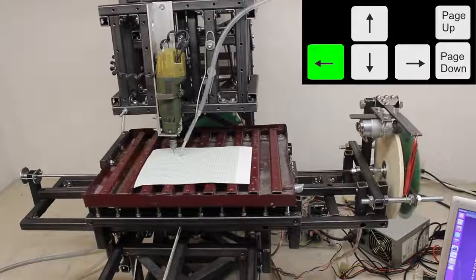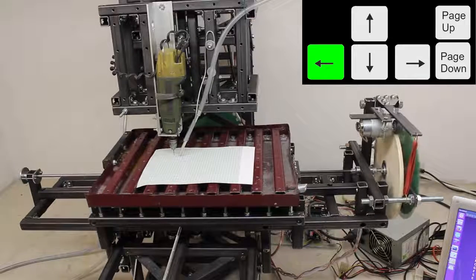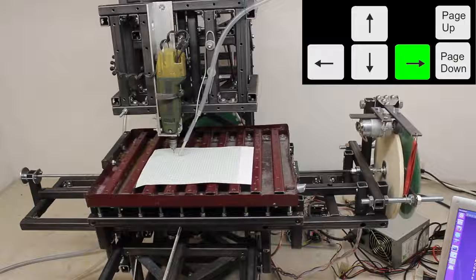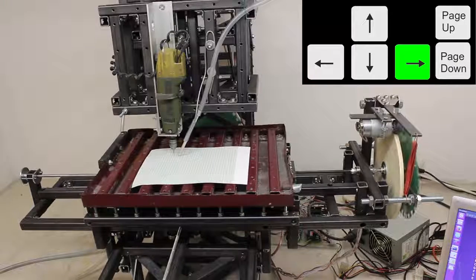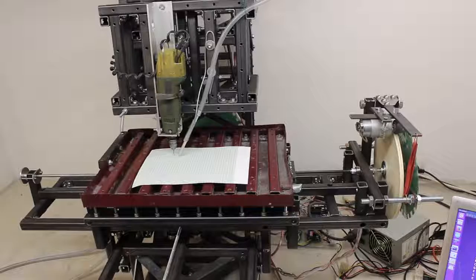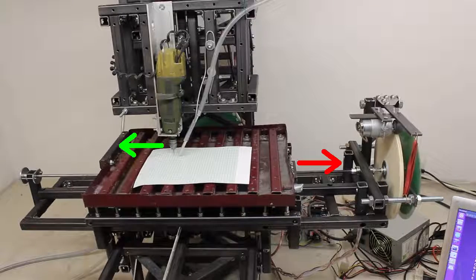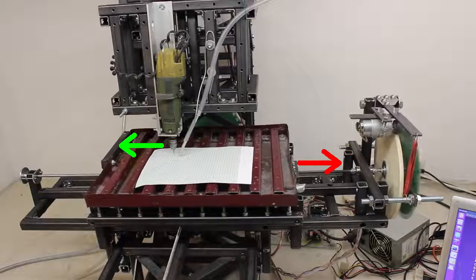When pressing the left cursor, the table must move to the right and when pressing the right cursor, the table must move to the left. Sounds weird, but consider that the router moves into the opposite direction relative to the table.